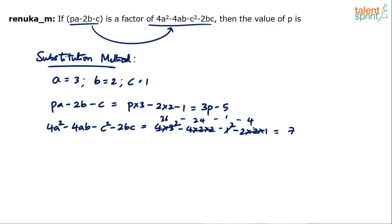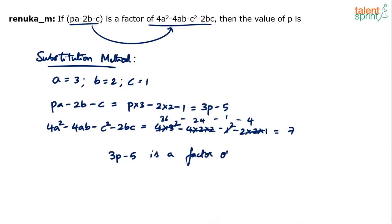So 36 minus 24 minus 1 minus 4 equals 12 minus 5, which is 7. So basically, 3p minus 5 is a factor of 7.